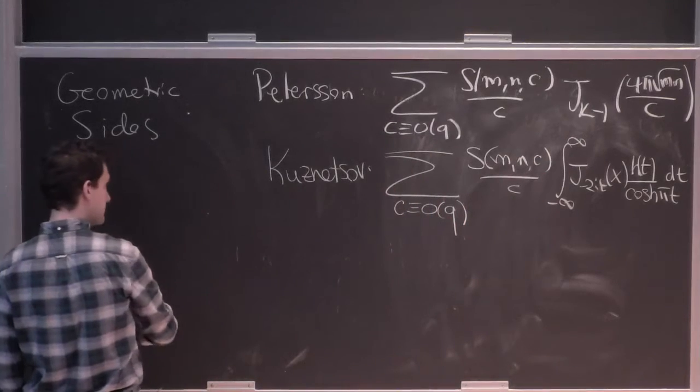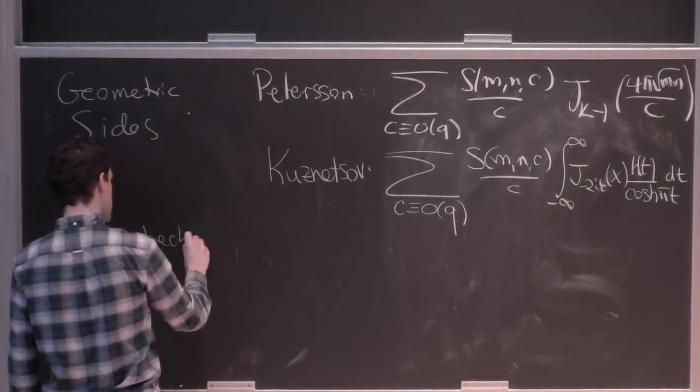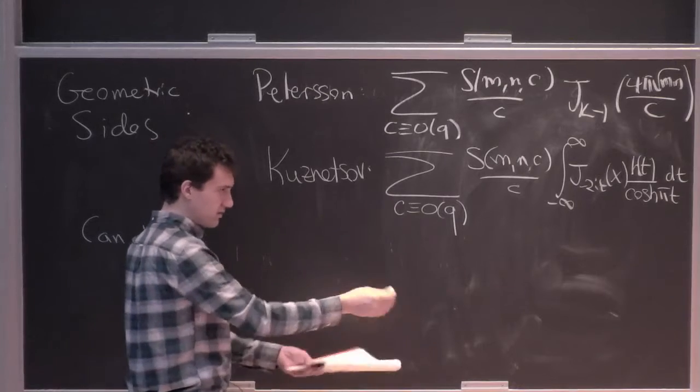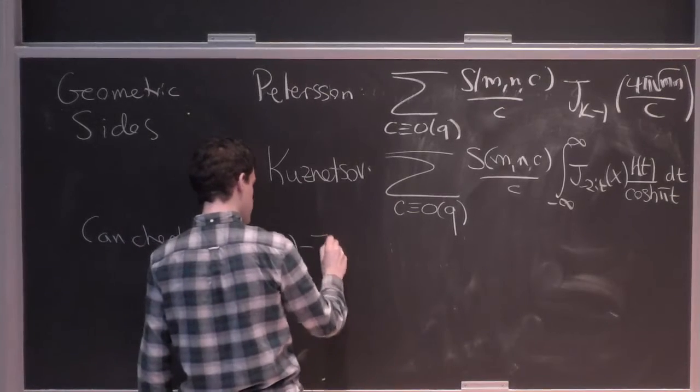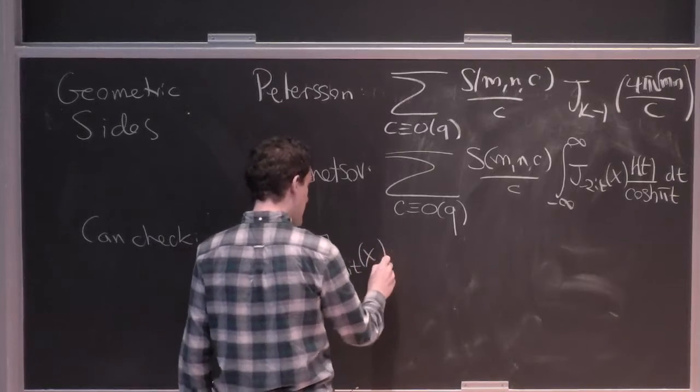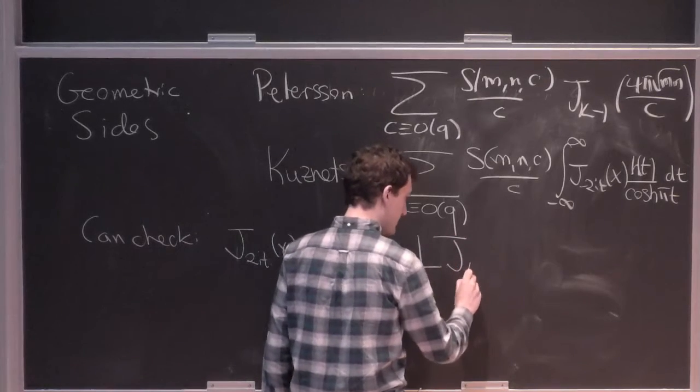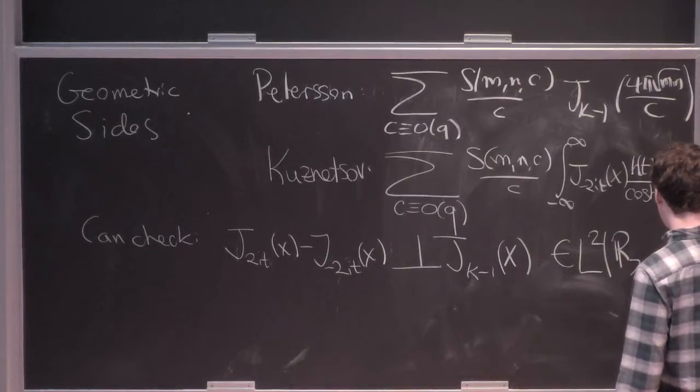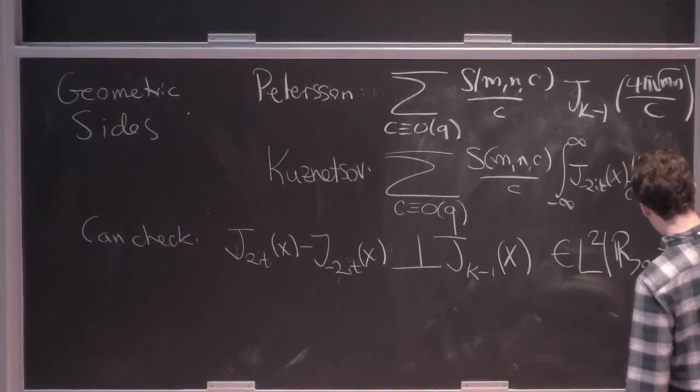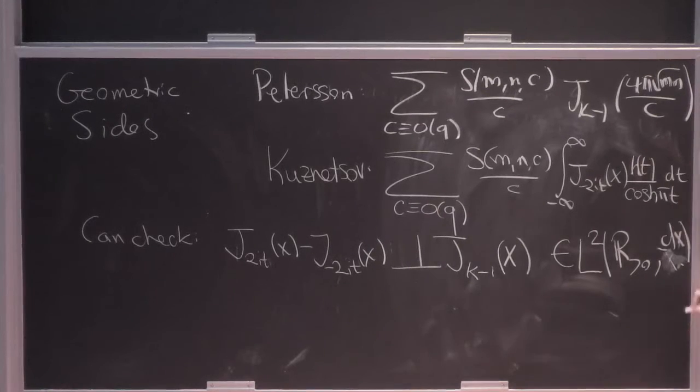And in fact, you can actually check using some special integral formulas, that this difference of two J Bessel functions that are purely imaginary arguments is actually orthogonal to all these real argument Bessel functions in L² of R⁺ dx/x. But in fact, it turns out that having both these test functions and these Bessel functions gives you everything.